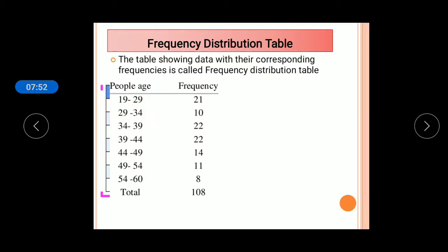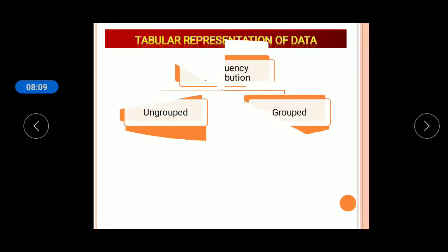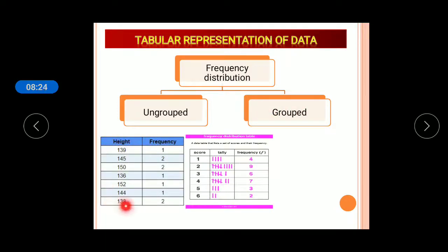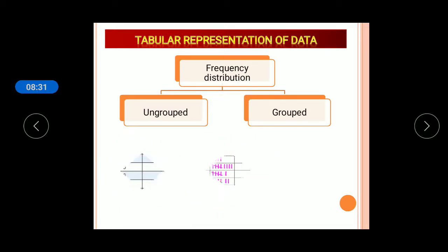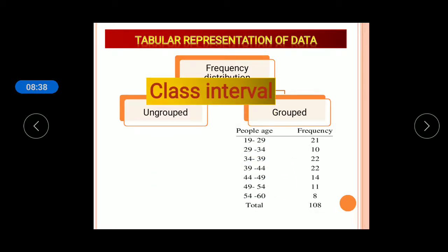Frequency distribution tables are of two types: ungrouped frequency distribution, which has only observations and frequencies not grouped, and grouped frequency distribution, where observations are grouped in the form of class intervals like 19 to 29, 29 to 34, and so on. In a class interval, the lower value is the lower limit and the upper value is the upper limit.